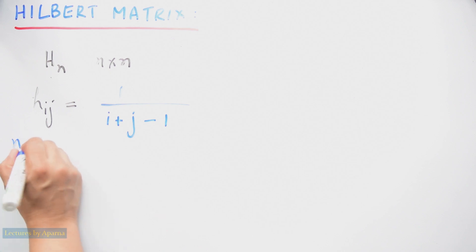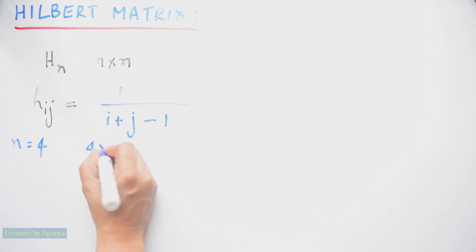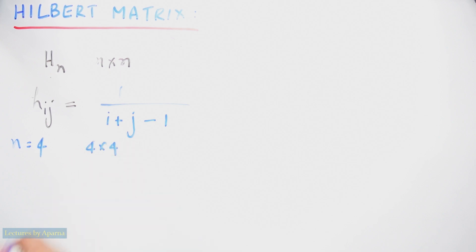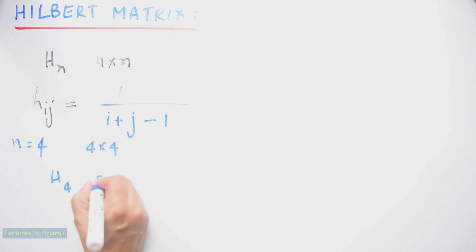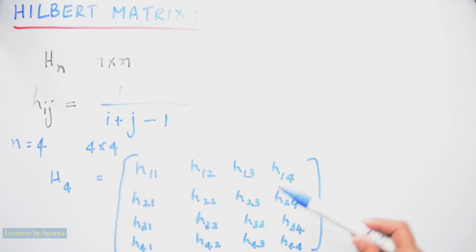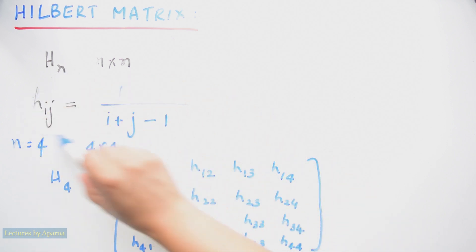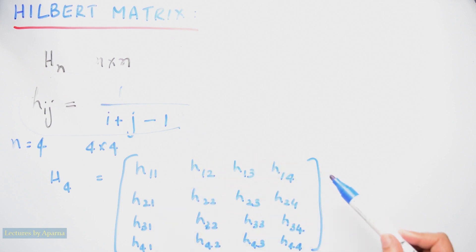If N is equal to 4, if we are writing a 4 by 4 Hilbert matrix, it will be like H4 = H11, H12, H13, H14. Like that, we have written all the elements. Now we have to substitute this equation and find the value of each element.